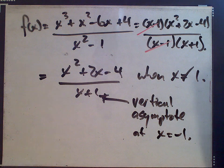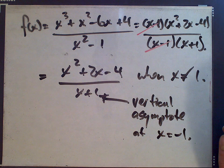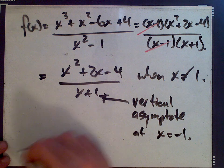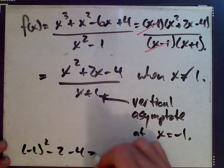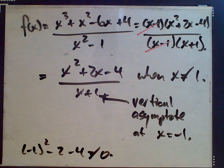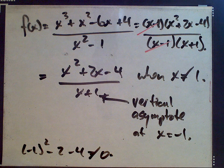So at x equals negative 1. Again, x equals negative 1 is not a root of the numerator because we get negative 1 squared minus 2 minus 4 is not 0. So we get one vertical asymptote.